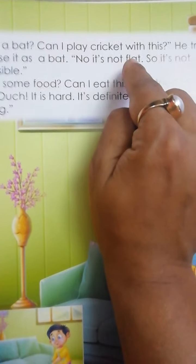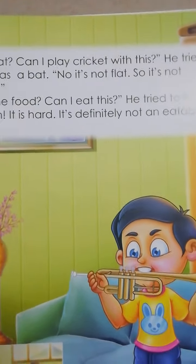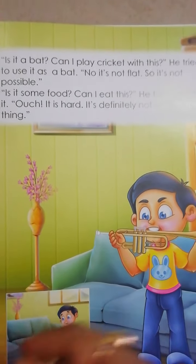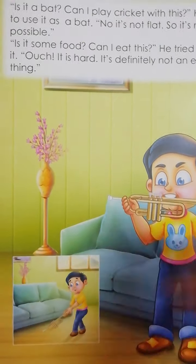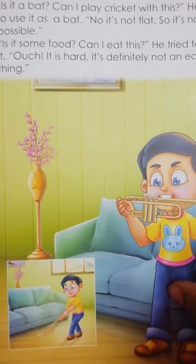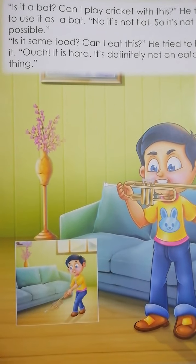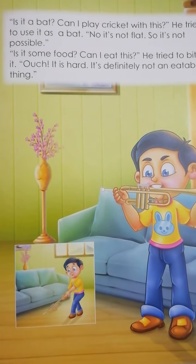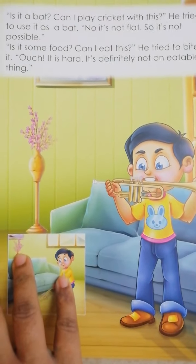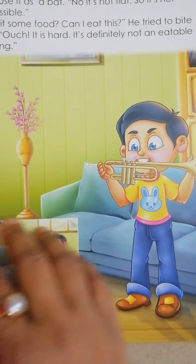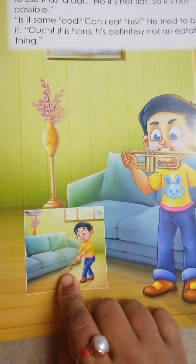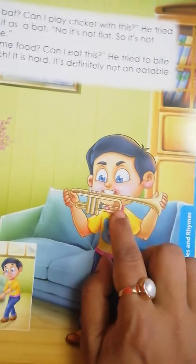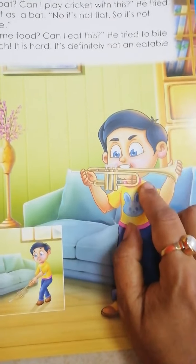No, it's not flat. यह flat नहीं है, तो यह bat नहीं हो सकता। Is it some food? Can I eat this? यह कुछ खाने का चीज है? He tried to bite it. उसने उसको bite करने की कोशिश की। Oh, it is hard — यह बहुत hard था। It's definitely not an eatable thing. खाने का चीज नहीं था।